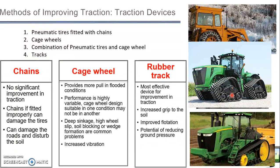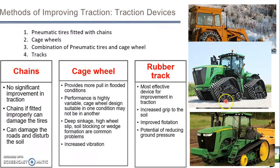The advantages and disadvantages of all these methods are: for chains, there won't be any significant improvement in traction, and if fitted improperly it can damage the tire, road, and disturb the soil. For cage wheels, they provide more pull in flooded conditions, but performance is variable, they don't suit all tires, and they increase vibration making the ride rough.